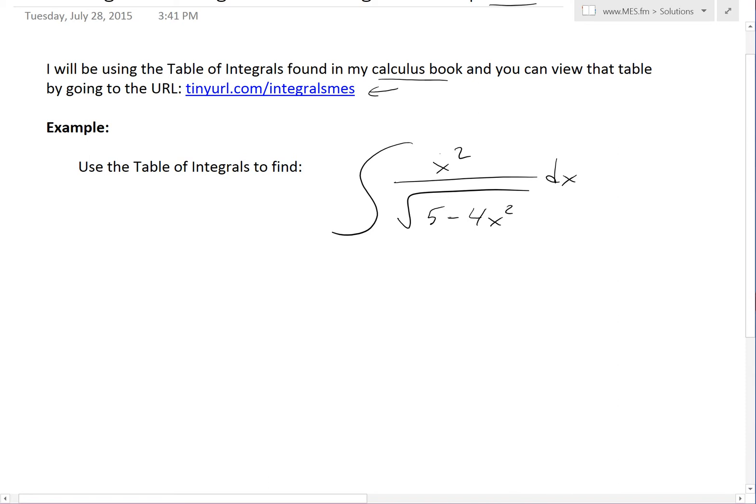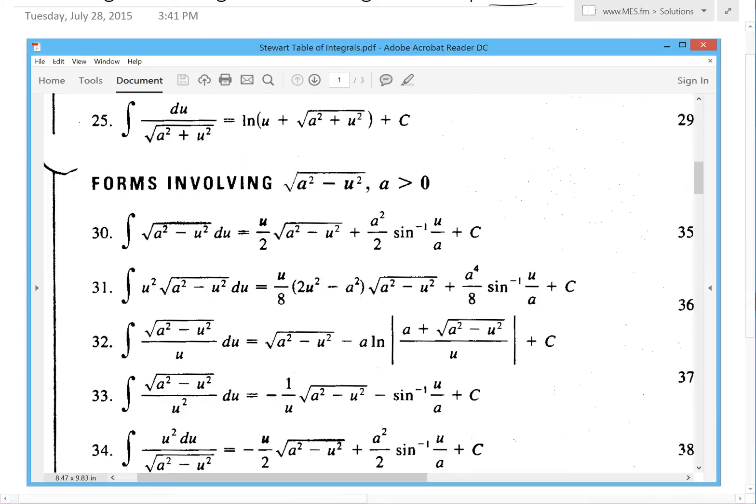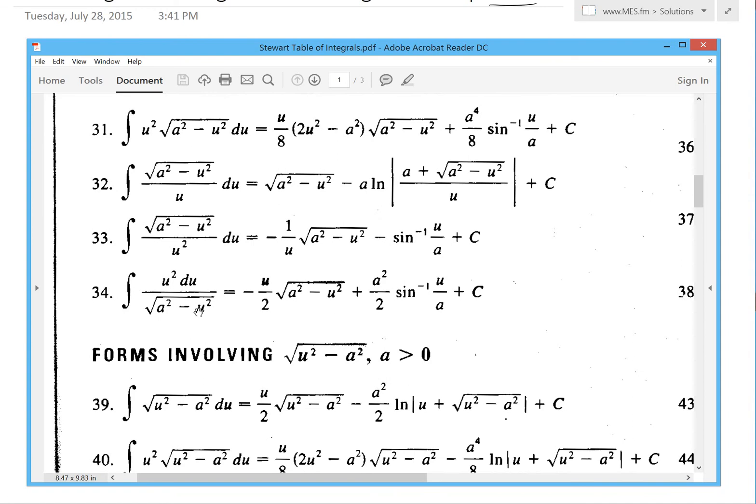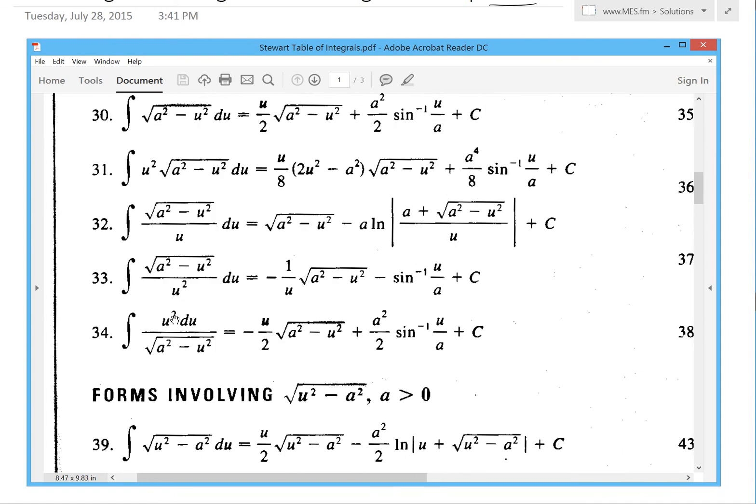Then there's a section here: square root a squared minus u squared, and that's how ours looks like. Ours has 5 minus 4x squared and there's an x squared on top. So that's this one right here. If you look at number 34, this is the closest looking one to ours.